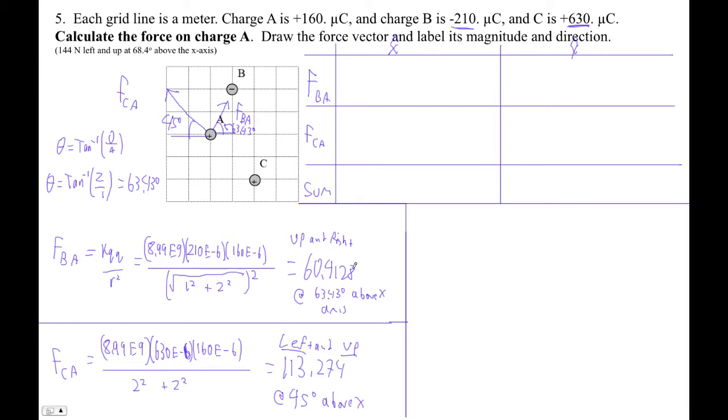So 60.4128, that's this guy. And it's up and right. So if we draw these little components here, here is the x component, here's the y component of that. The x is the cosine. So I'm going to go 60.4128 cos of 63.43. And that's going to be positive in the x direction because it's to the right.